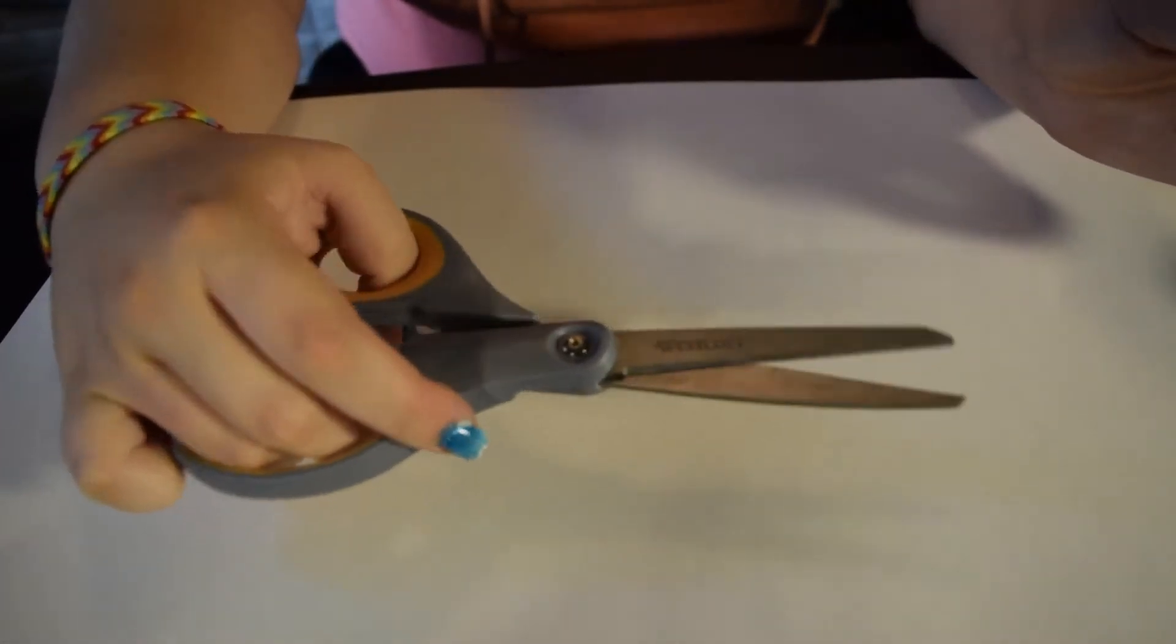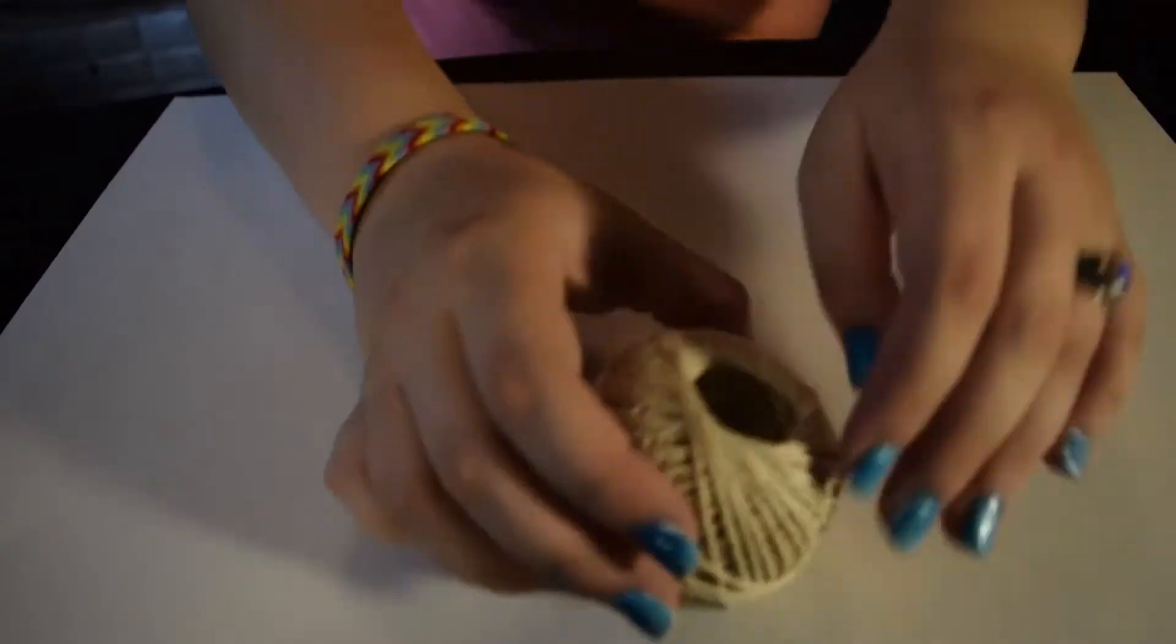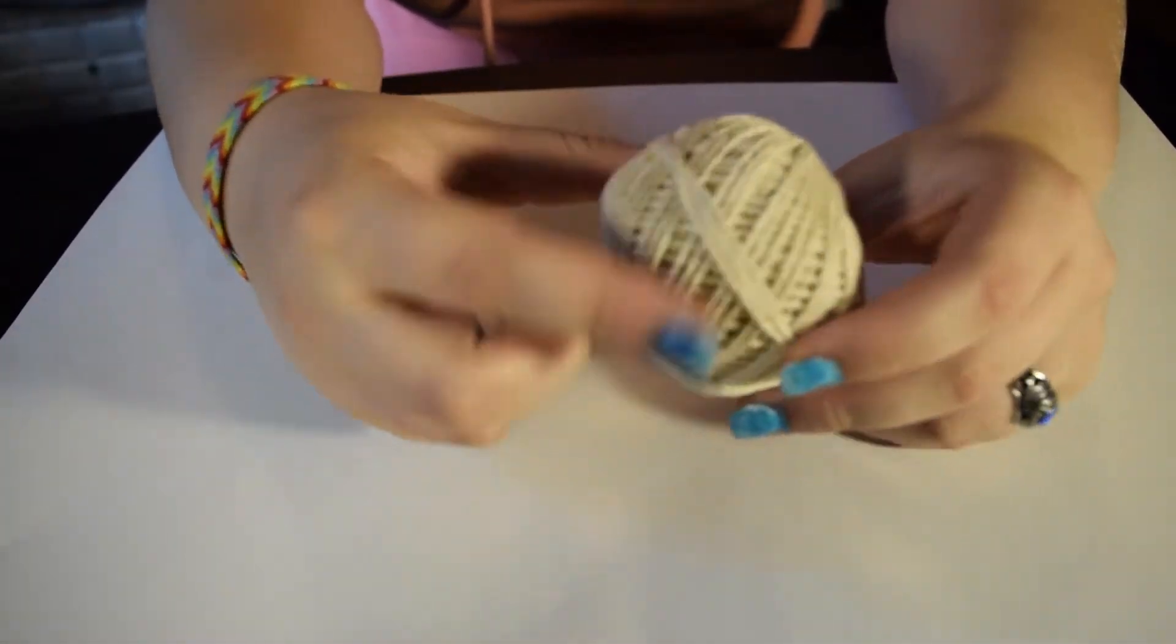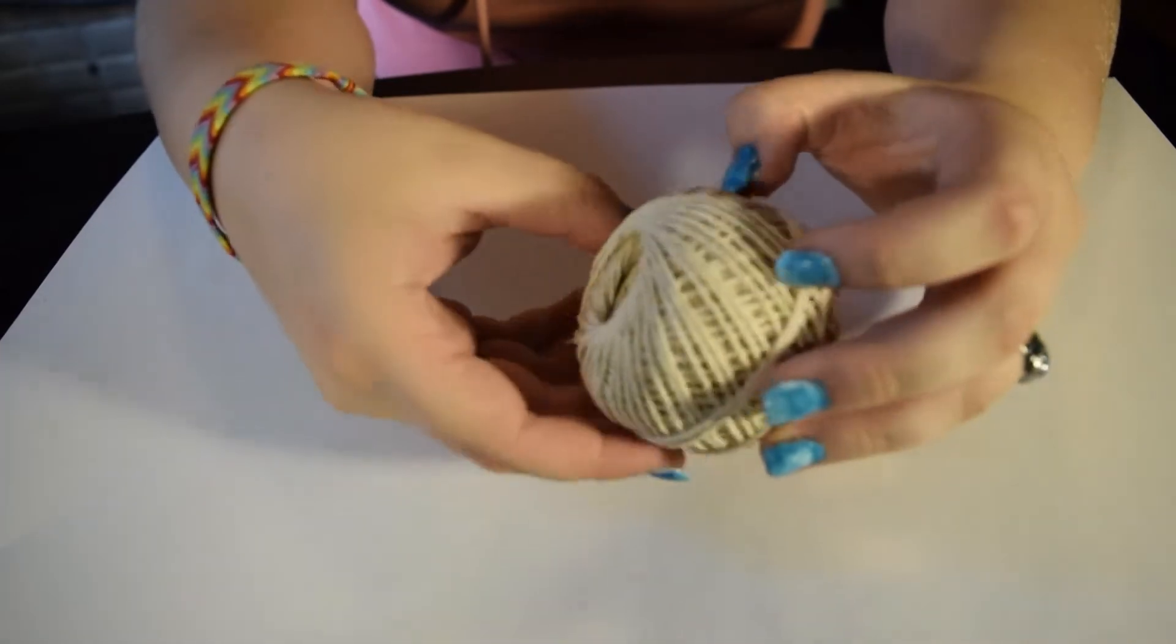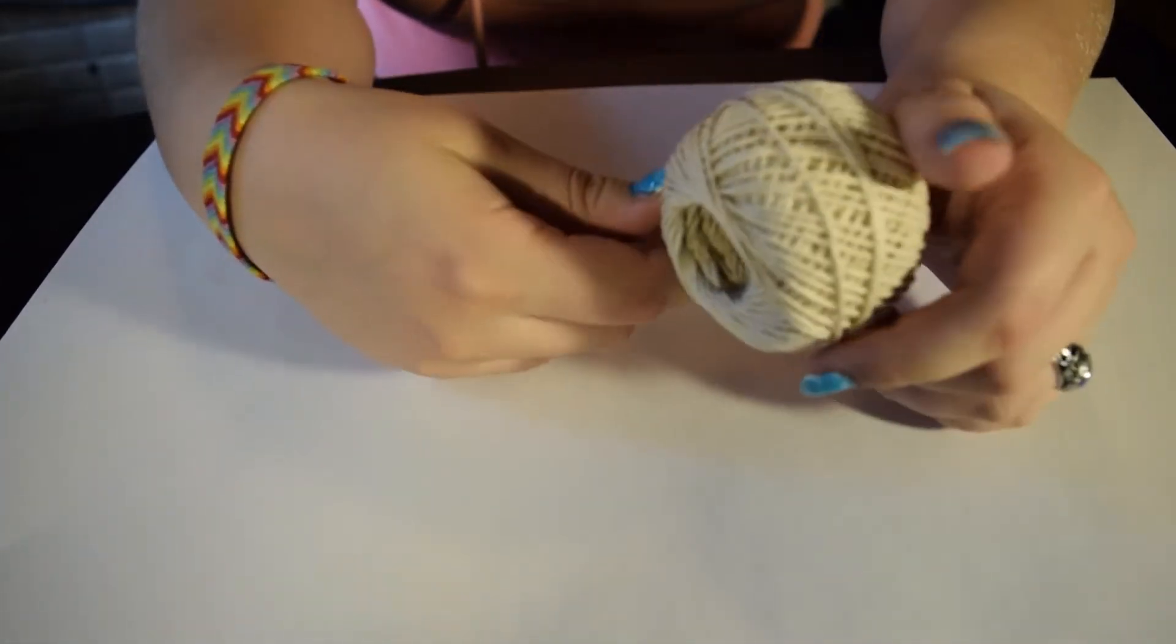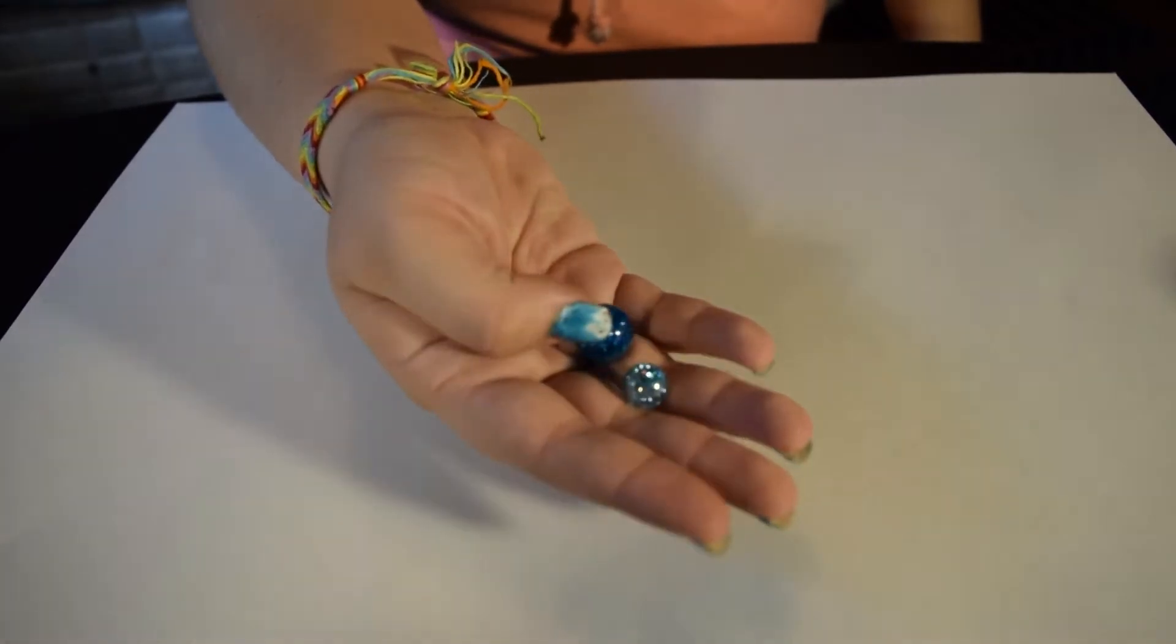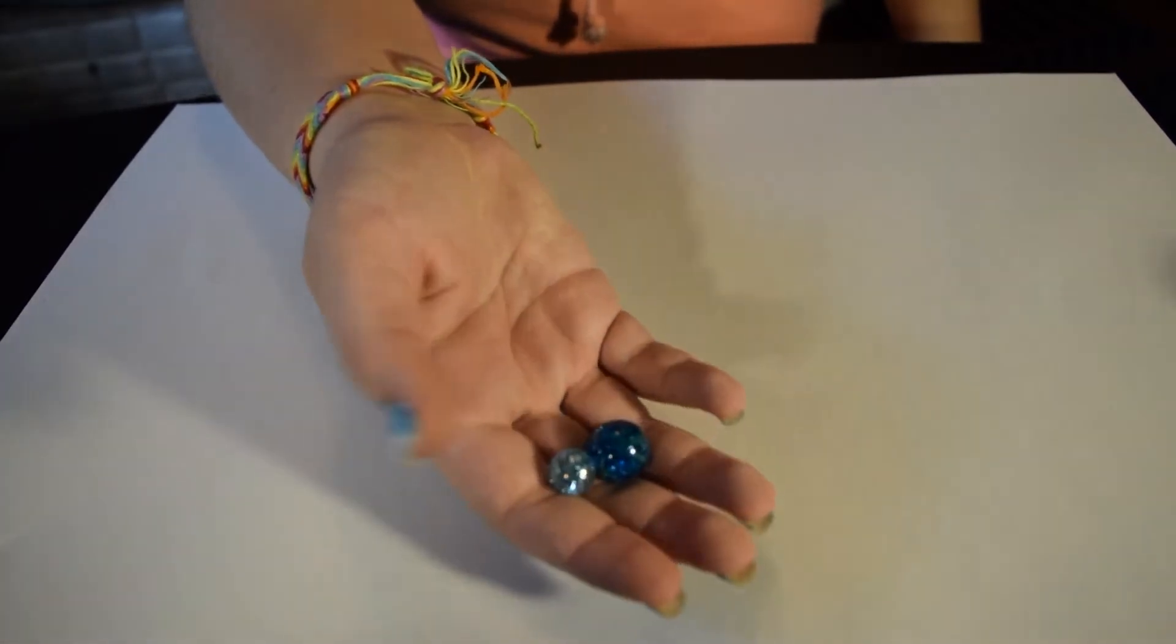So what you're going to need for this DIY is some scissors, a bit of fine hemp twine - you can use a different type of string if you wish or just find a random piece of string around the house - and then last but not least, you'll need a marble or a stone for this DIY.